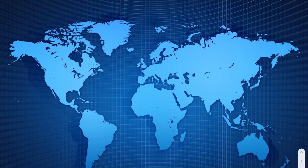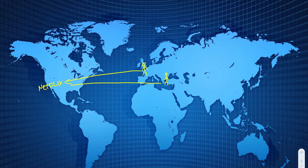Imagine the following scenario: there's a Netflix server in California, and you want to watch movies but you're based in London. You have a friend in Bulgaria who also wants to watch. Both of you need to download the content from the Netflix servers in California. If every person in the world who wanted to watch The Crown had to go to the same server in California, this would obviously create a bottleneck with so many connections coming in.